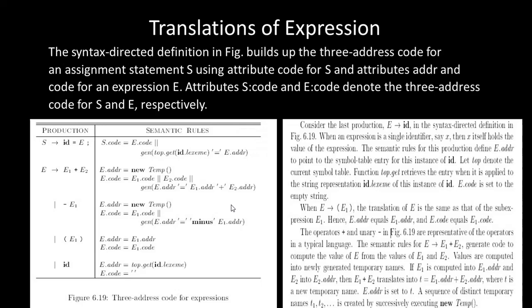Now, translation of expressions. For the translation of type expressions, we use the assignment statement. For that we take support of the syntax-directed definition as well as three-address code. The syntax-directed definition, shown in this table, builds up the three-address code. The right-hand side of three-address code consists of at least one operator.